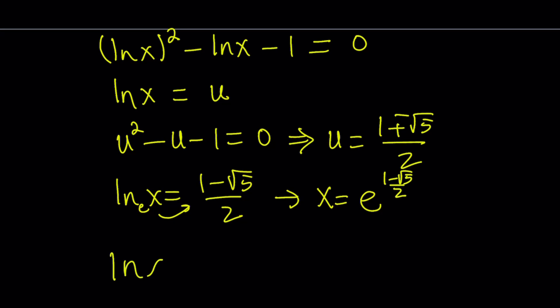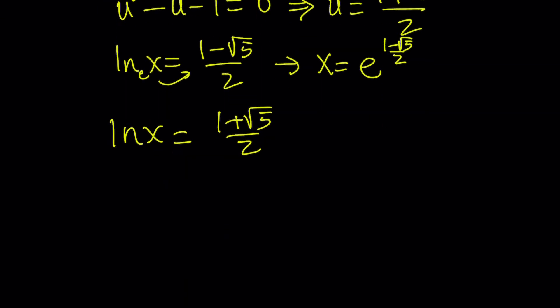And if ln x is equal to 1 plus root 5 over 2, and yay, golden ratio, you can write x as e to the power of golden ratio. I know some people use a symbol. Is that a phi? Whatever. Something like that. But anyways, those are the solutions.